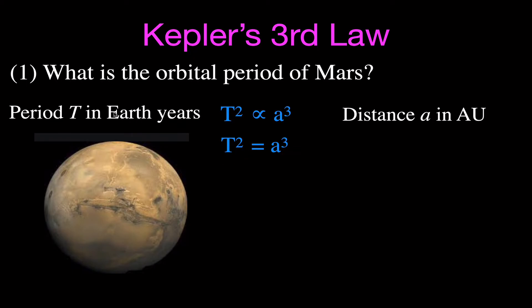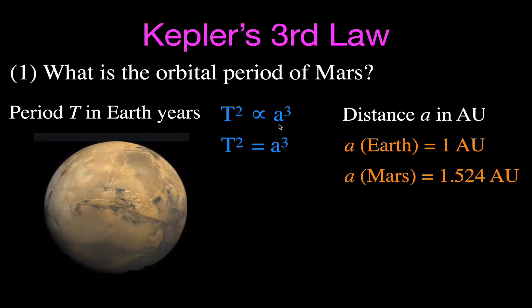We'll give the period in years and the distance in astronomical units. One astronomical unit is the distance from the Earth to the Sun — the solar system's meter stick — approximately 150 million kilometers. For Mars, the distance from the Sun, its semi-major axis, is 1.524 astronomical units. So we can solve for the period by plugging that in.